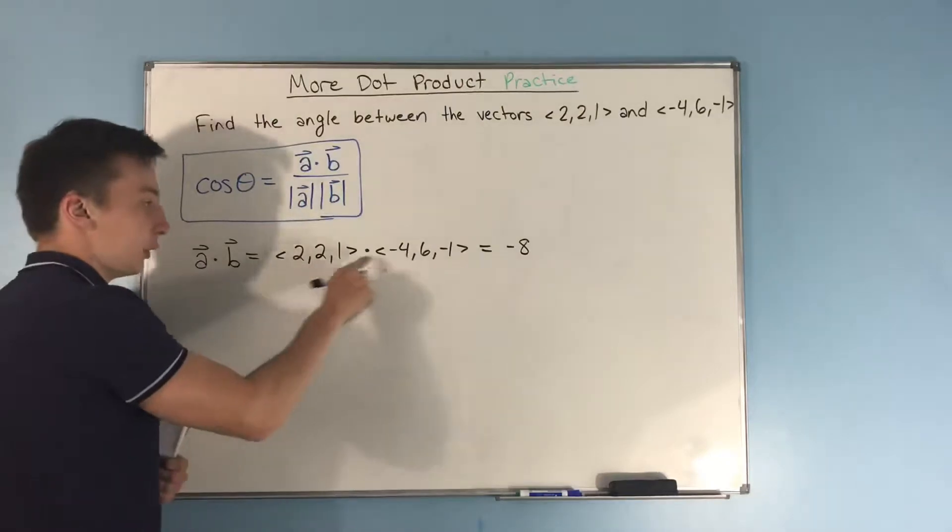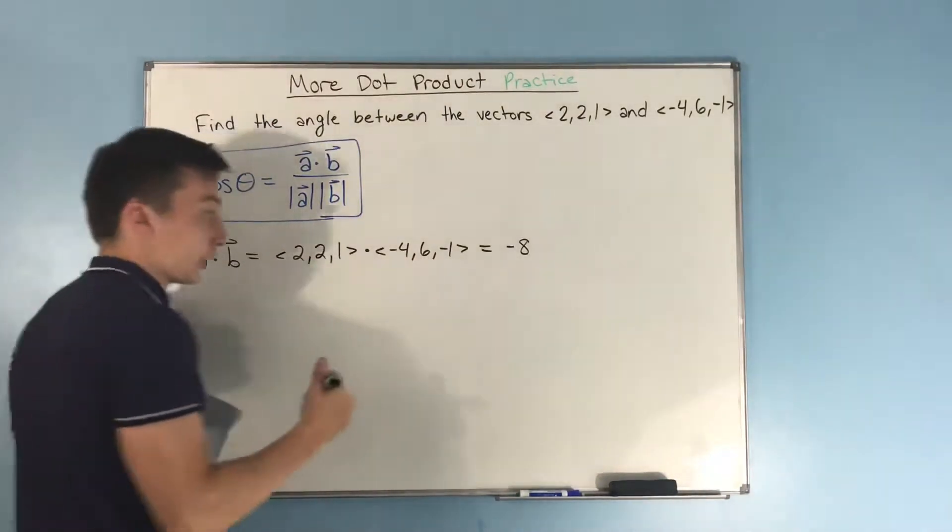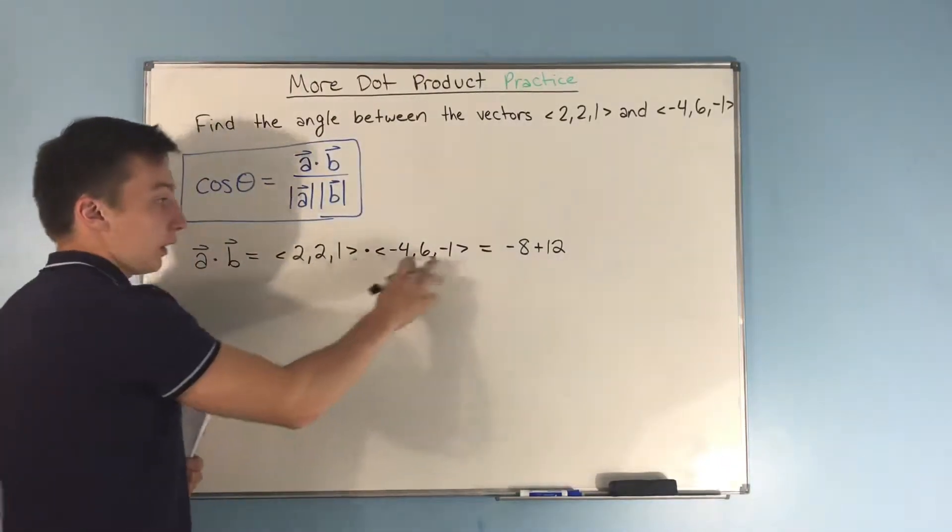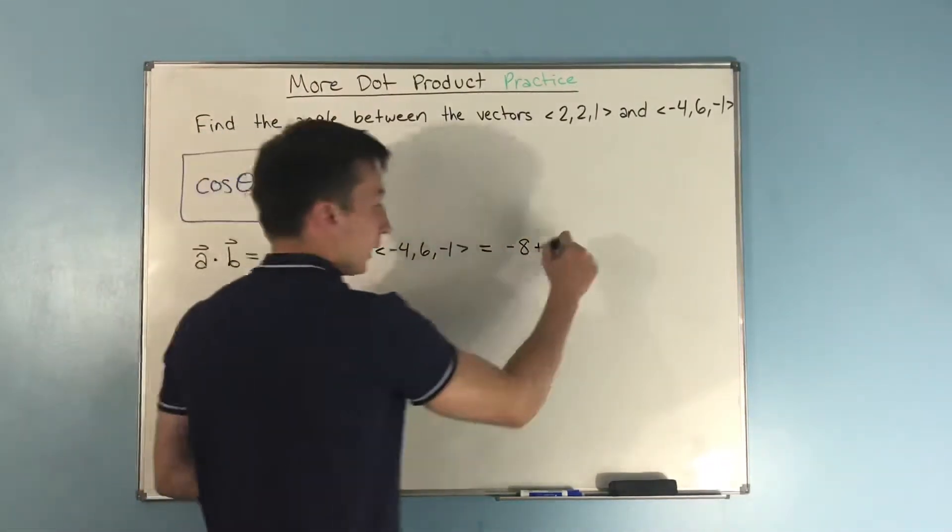Next, we have 2 times 6, that's going to give us 12. Next, we have 1 times negative 1, that's going to give us negative 1.